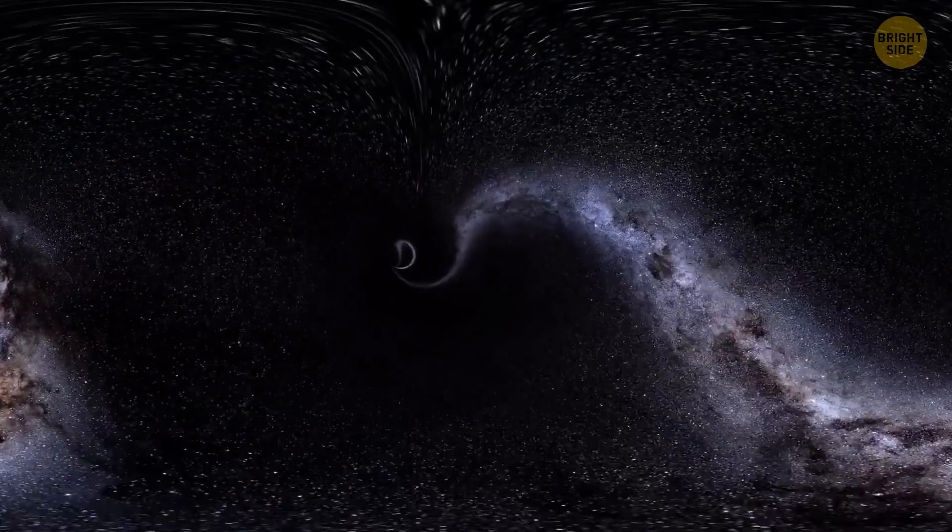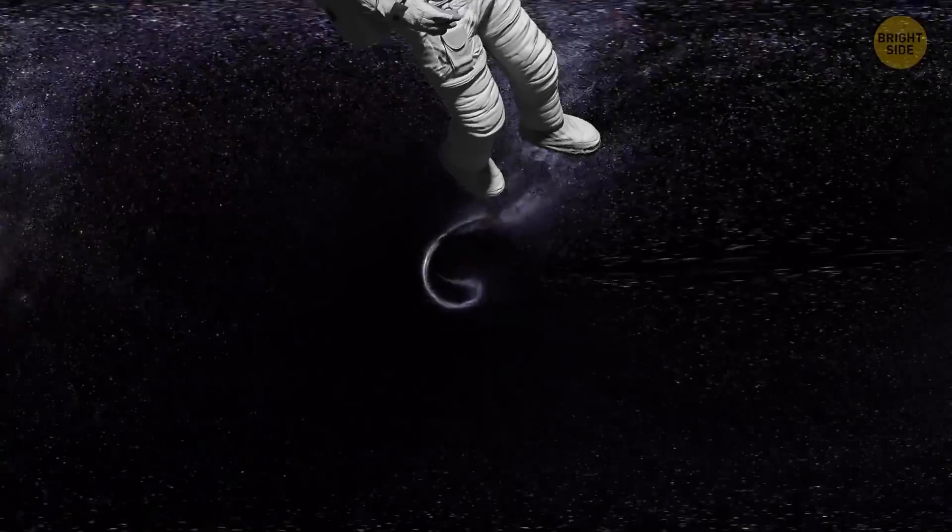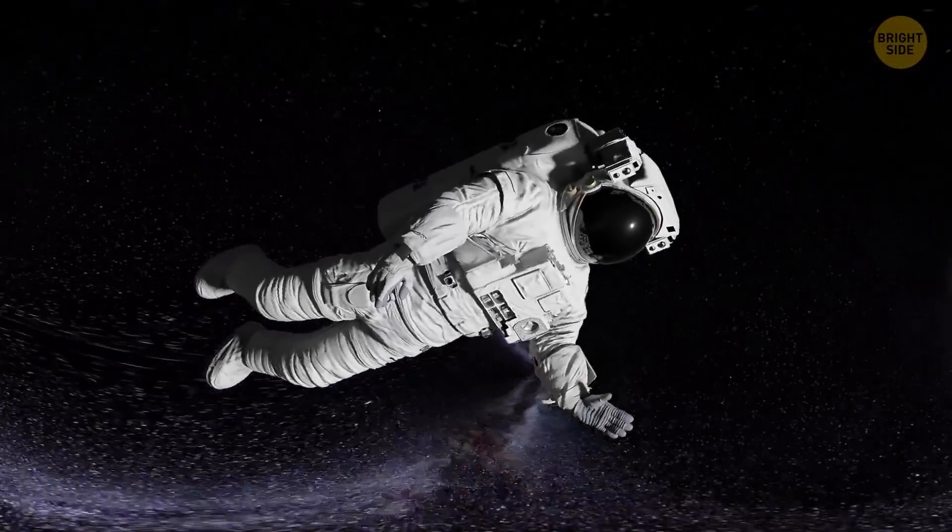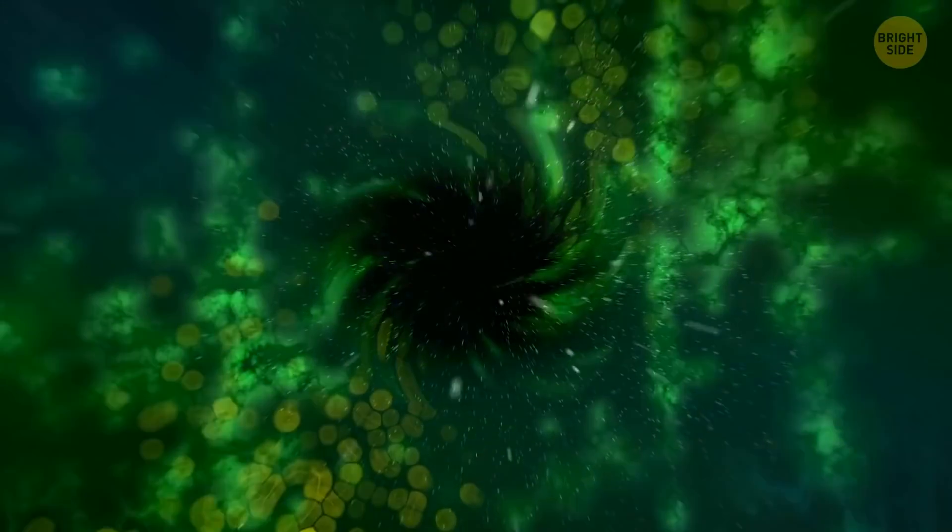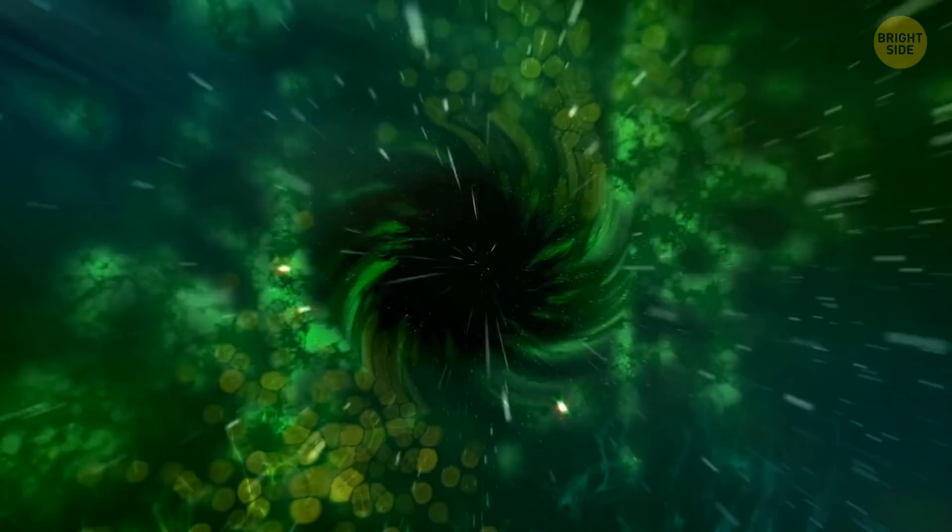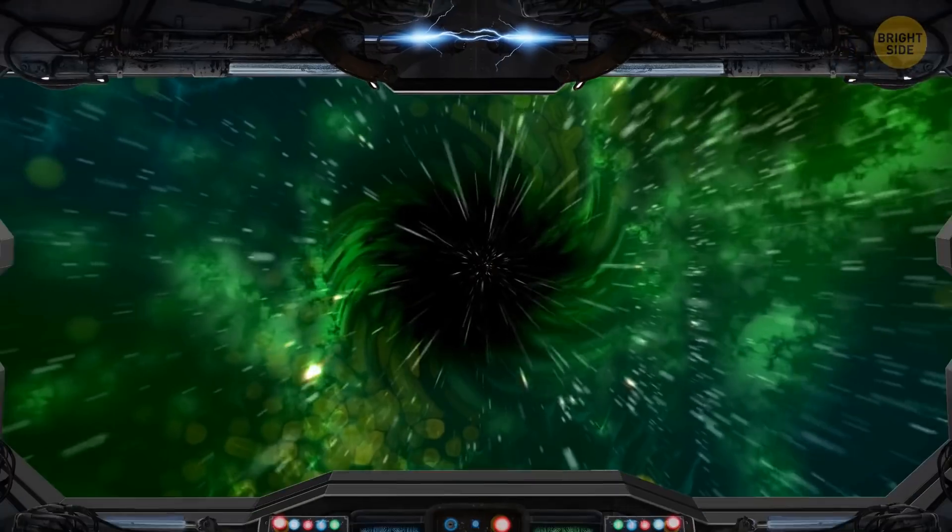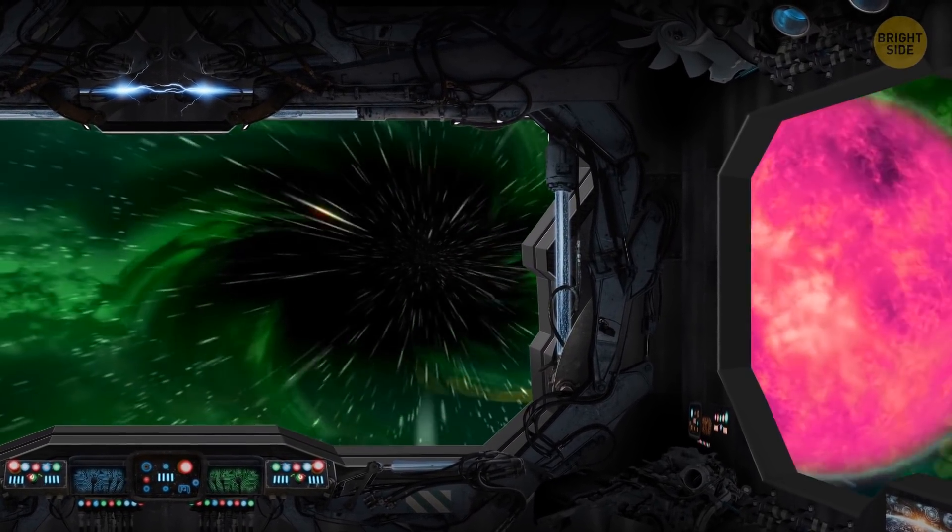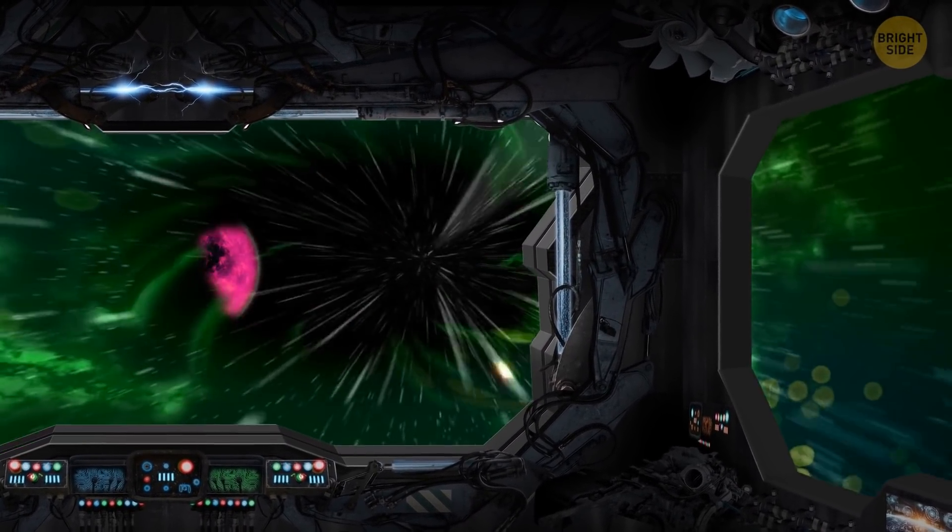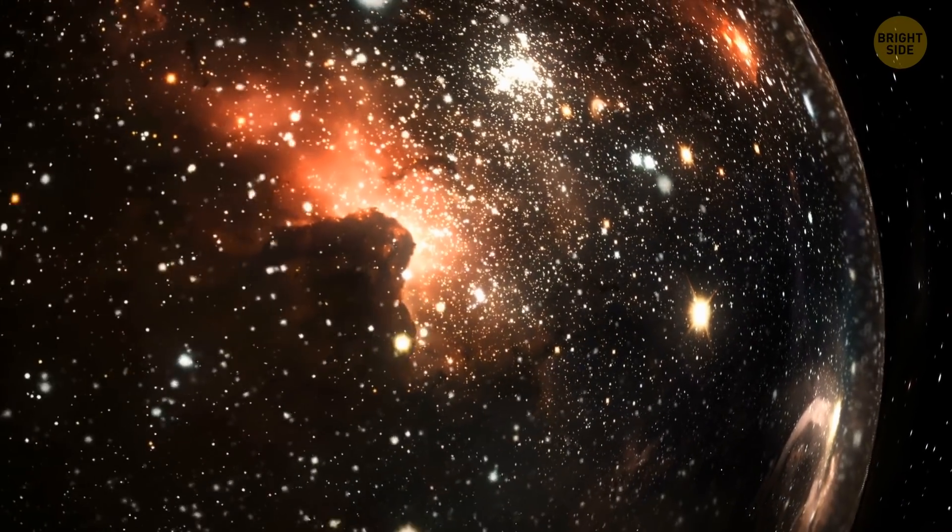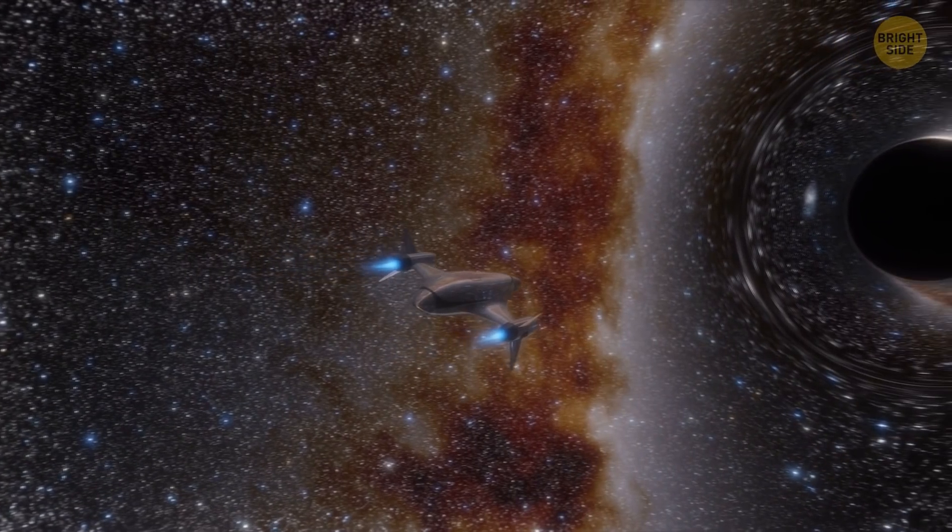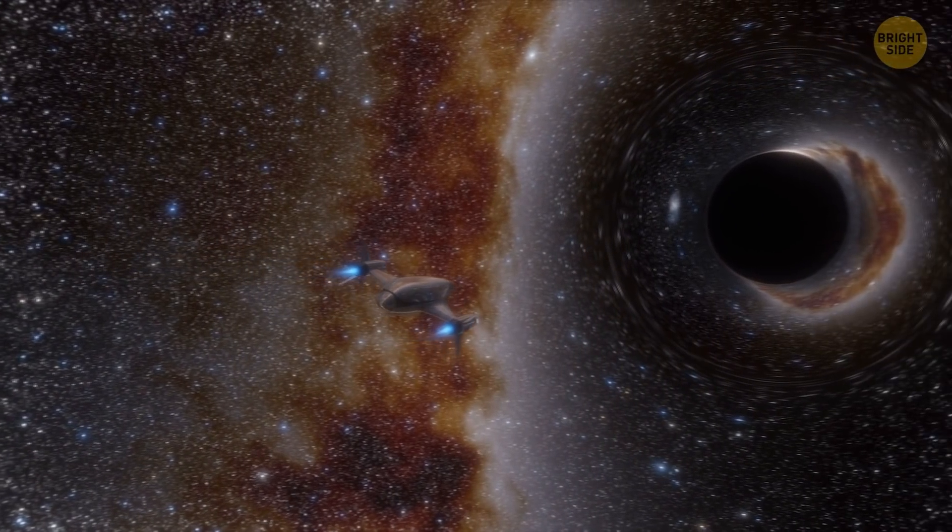But there's a theory claiming that a spacecraft or even a person can survive falling into a black hole, but only if the black hole is supermassive, like the ones that lie in the centers of galaxies. They can be millions and billions of times heavier than the sun. But even though they're heavier, they're also bigger in size. This means gravity probably doesn't increase so fast there. You or your spacecraft might not turn into spaghetti and might even get to see what's at the heart of the black hole.